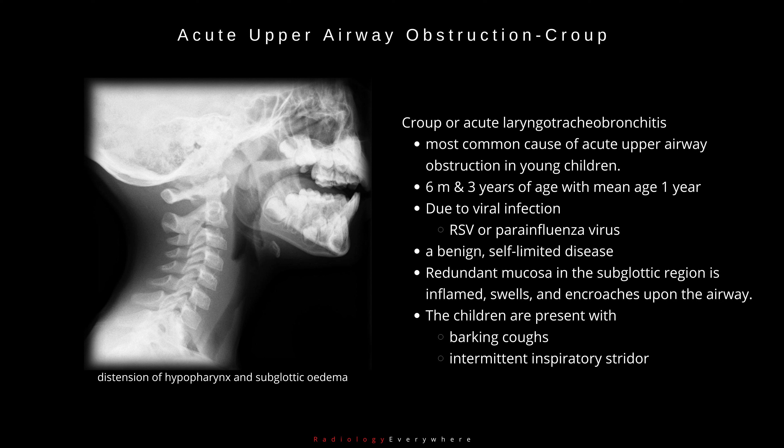Redundant mucosa in the subglottic region is inflamed, swells, and encroaches upon the airway. Children present with barking coughs and intermittent inspiratory stridor. Diagnosis is usually made clinically. Radiography is not used to confirm the diagnosis, but to exclude other serious causes of upper airway obstruction.